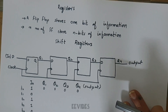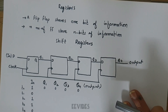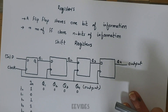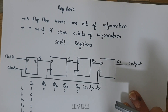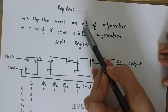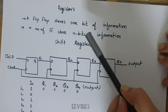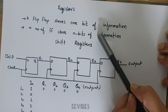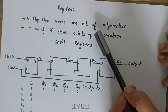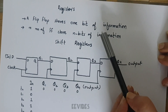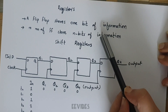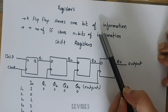Hi everyone, this is Asma Mushtaq from WIPS. In this lecture I'll explain what registers are, how shift registers work, and how they transfer data. Registers are basically designed using flip-flops, which are elements that store one bit of information. For storing n bits of information you need n number of flip-flops, and when you combine flip-flops you get registers. A common clock is used for each flip-flop in a register.